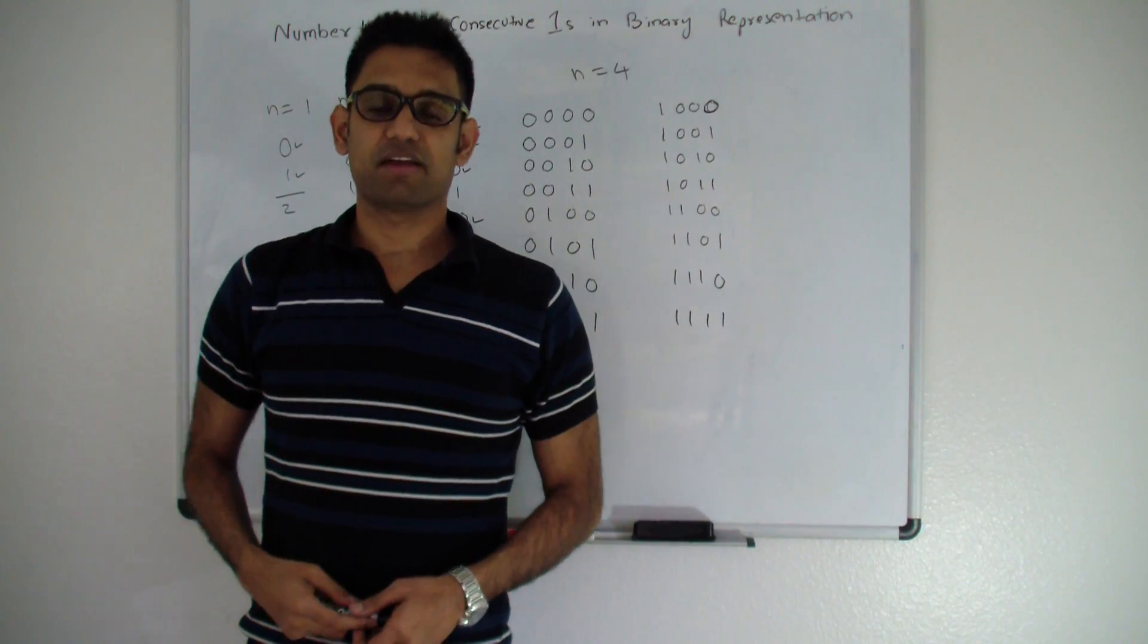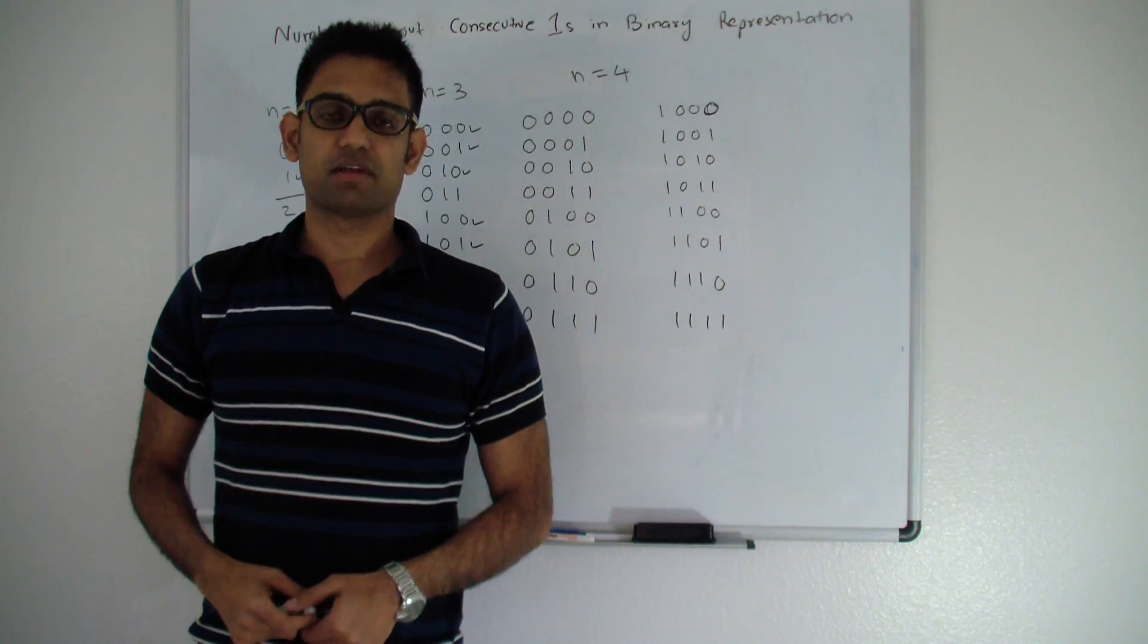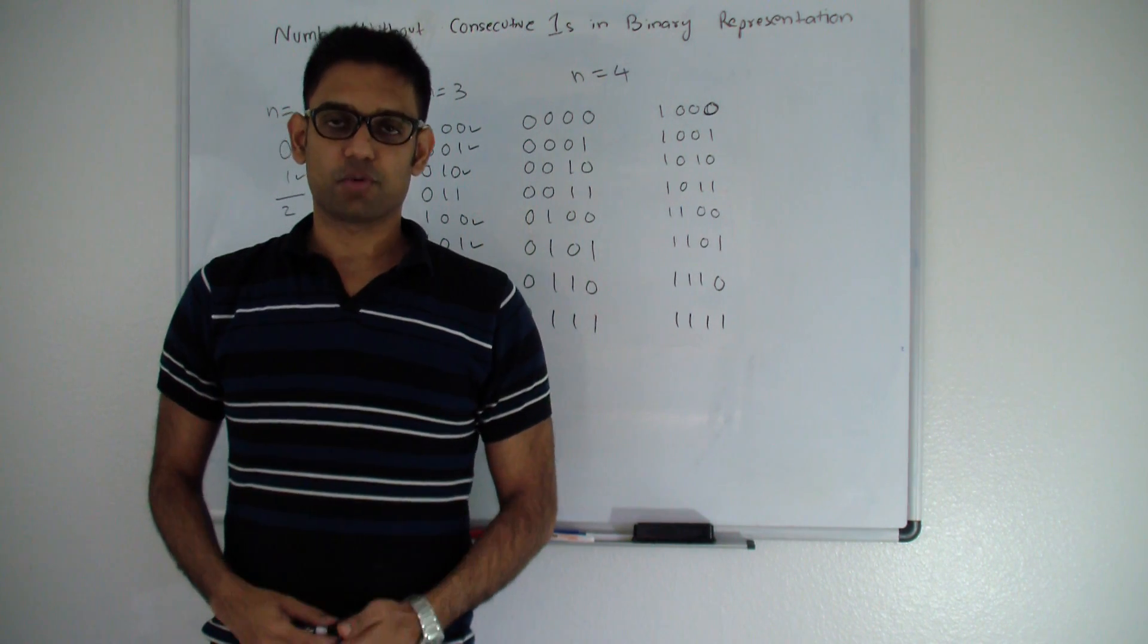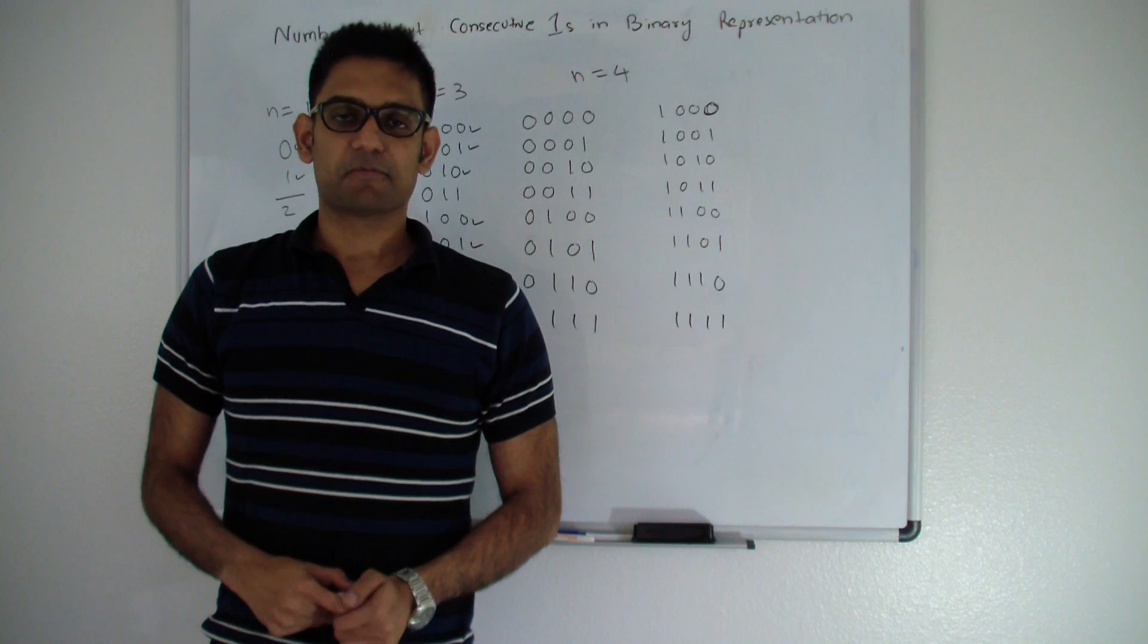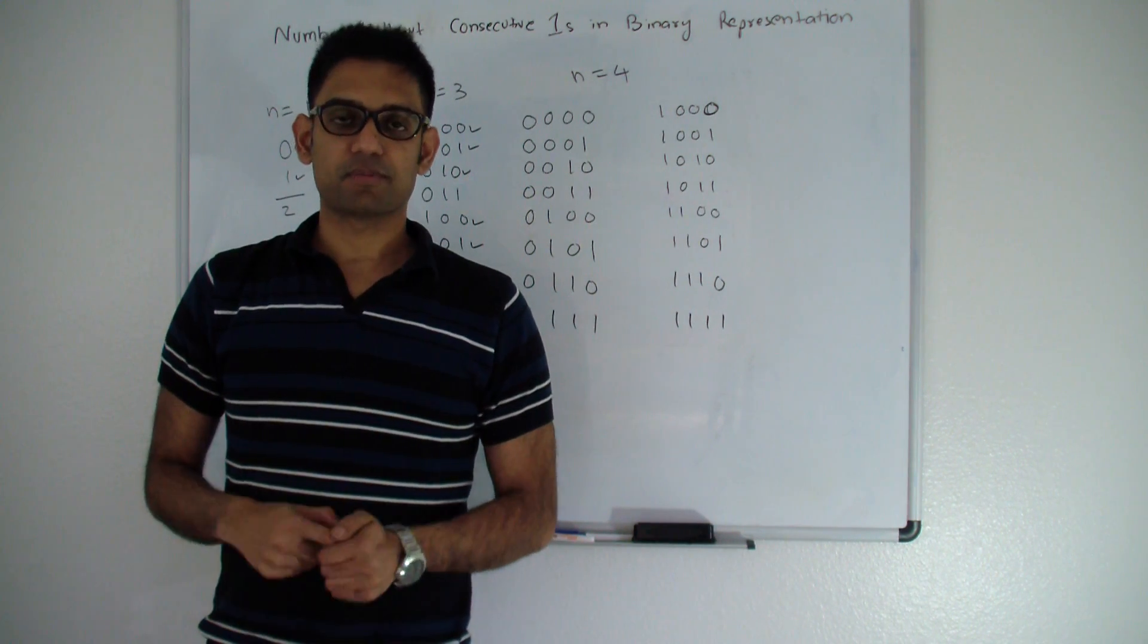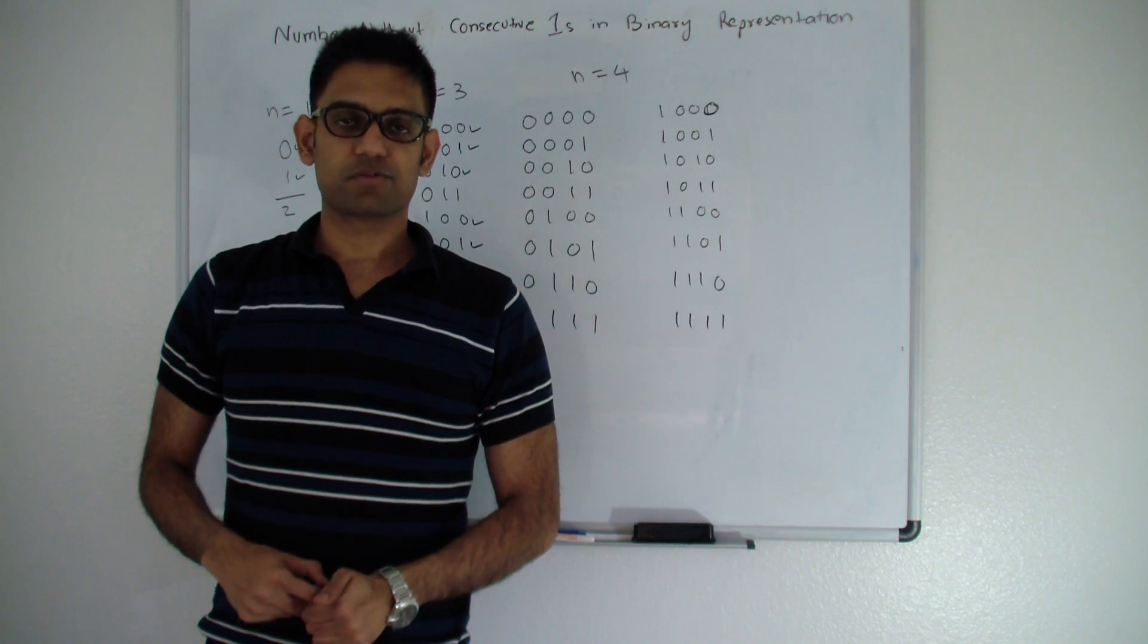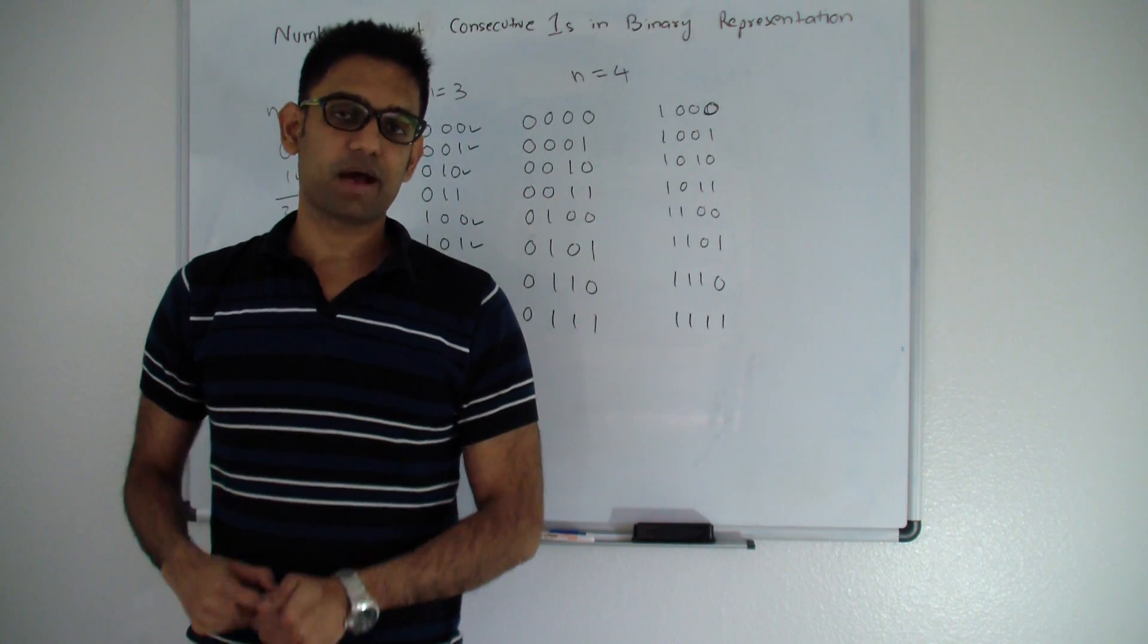Hello friends, my name is Tushar and today we're going to talk about the question without consecutive ones in binary representation. The question is: given n, find the total number of numbers from 0 to 2 raised to n-1 such that the numbers do not have consecutive ones in their binary representation.